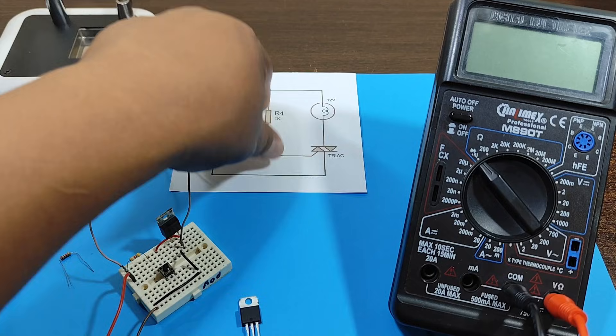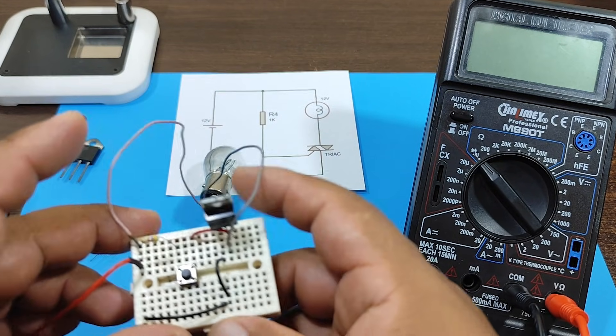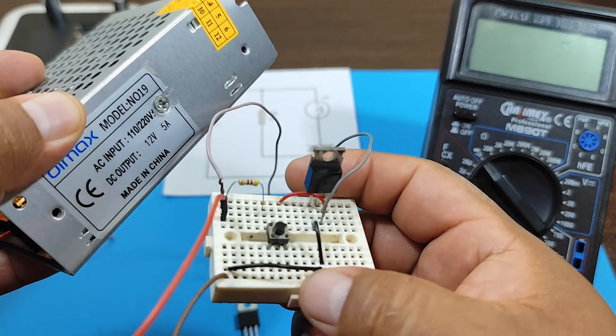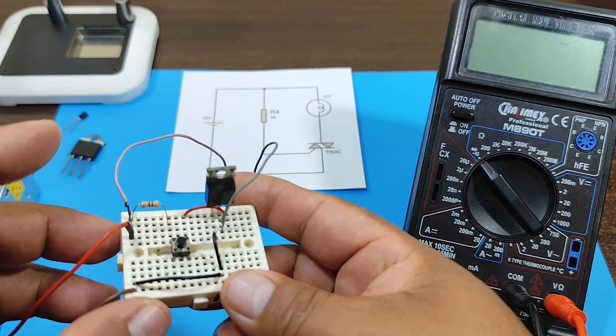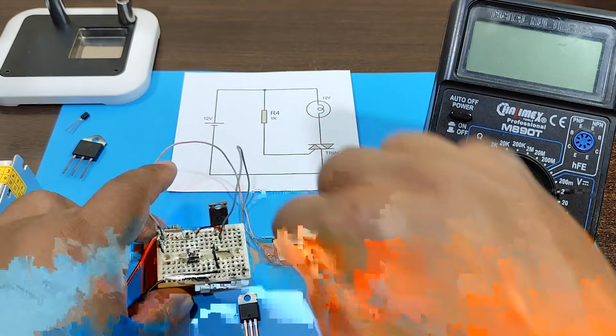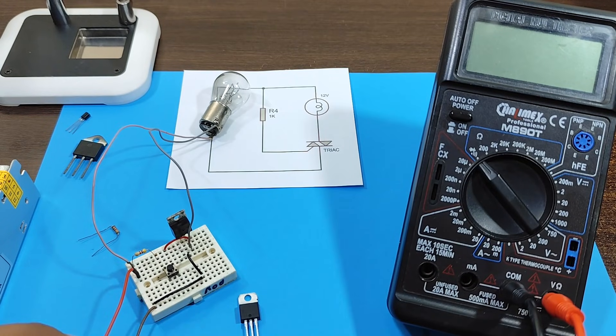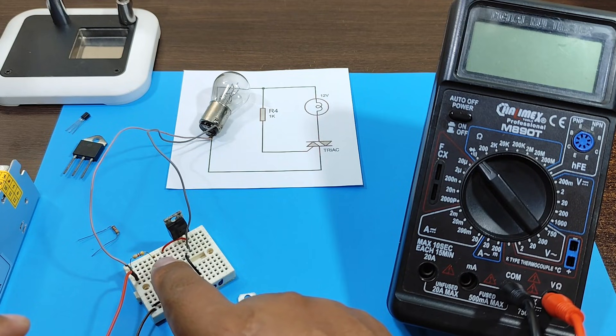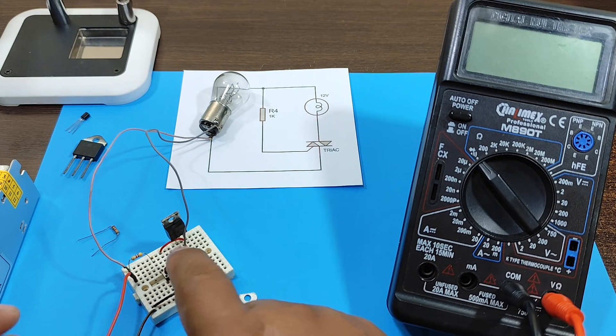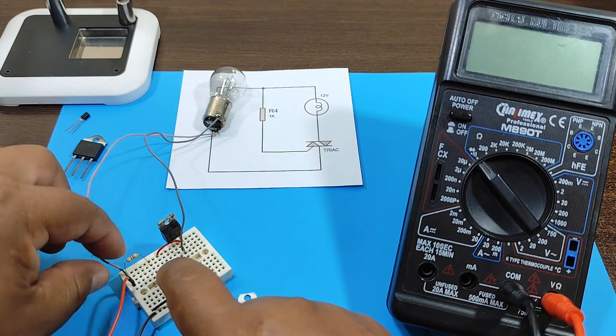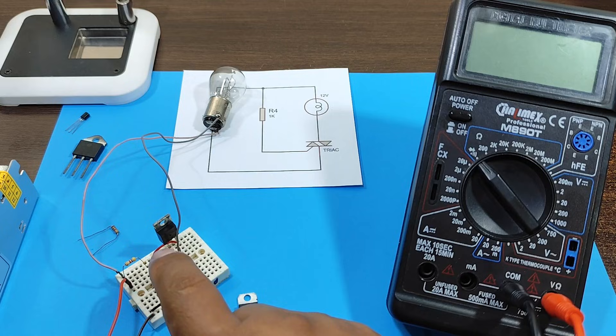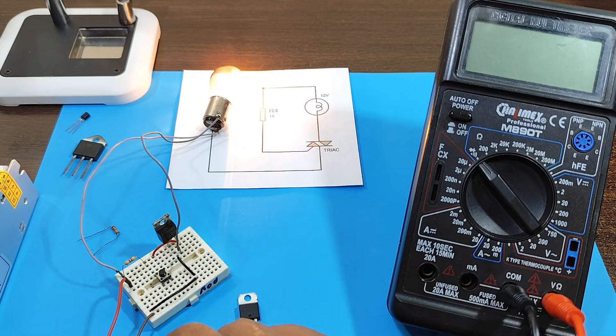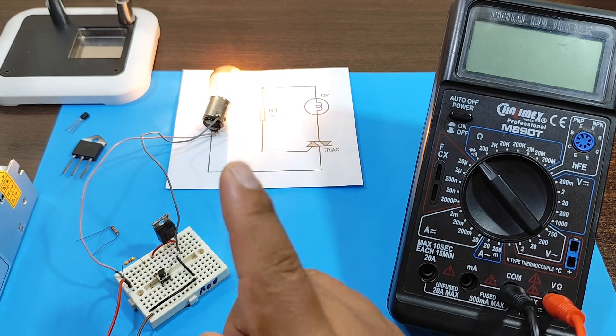Alright, let's look at the circuit. Here we have the circuit as I mentioned. We are using a direct current source. Now let's press the button and see if the light bulb turns on. And as you can see, the light bulb turns on, and only one pulse was needed.